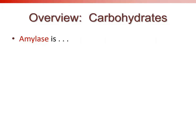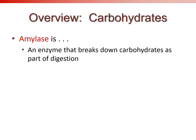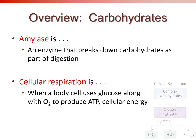When we eat carbohydrates, amylase is one of the first enzymes they encounter — it's in our mouth and starts the breakdown of carbohydrates as part of digestion. Once in the body, cellular respiration uses glucose along with oxygen to produce ATP. For this class, the key point is that cellular respiration takes glucose and oxygen and turns them into ATP.